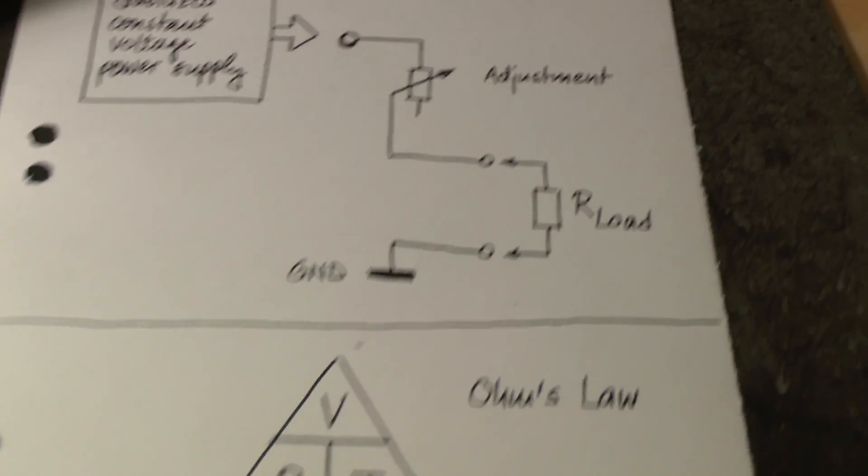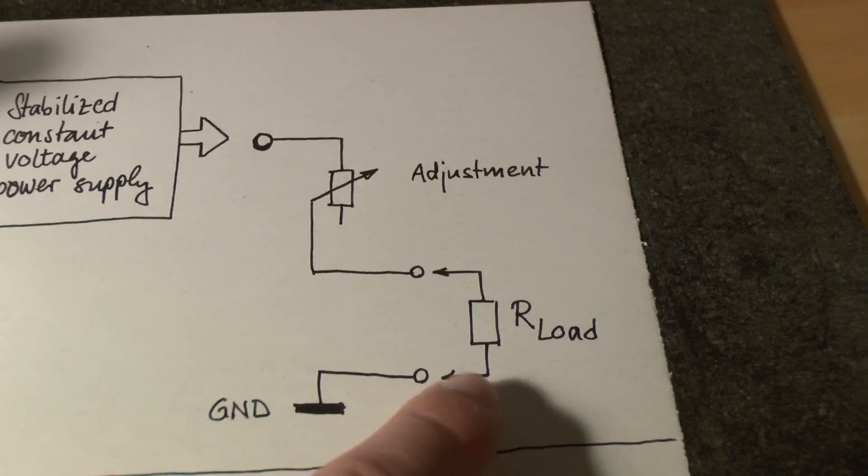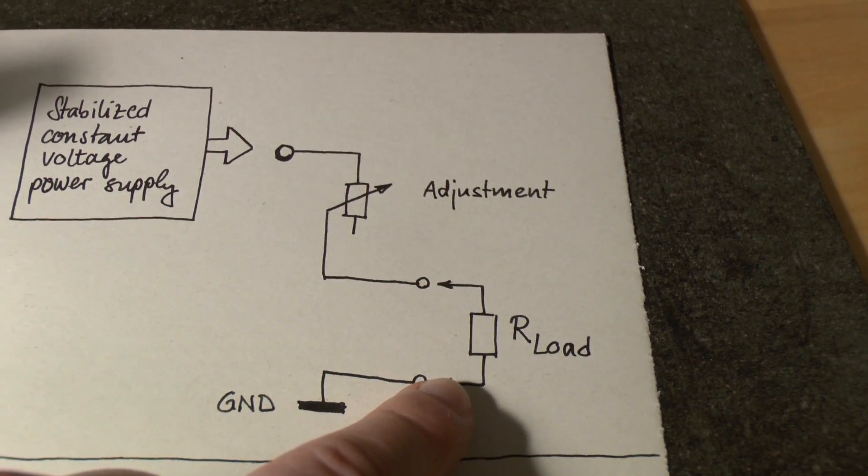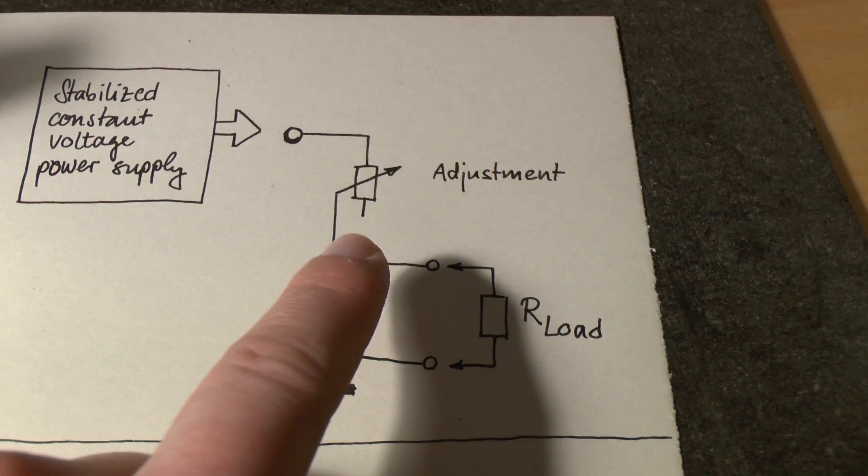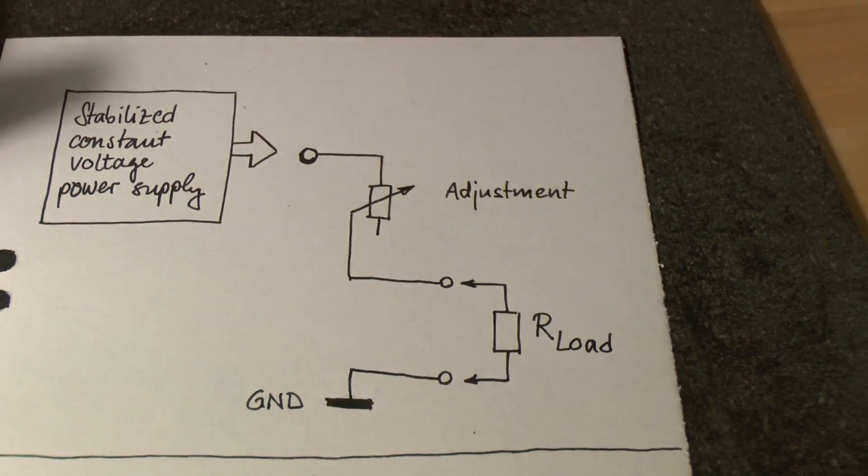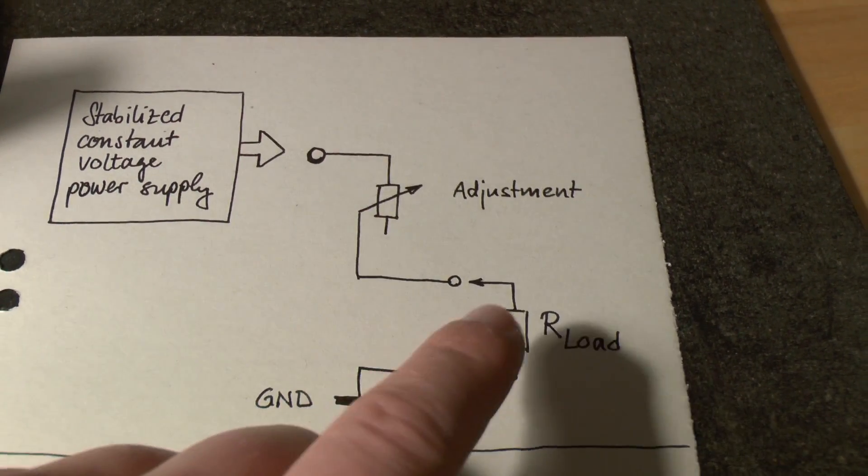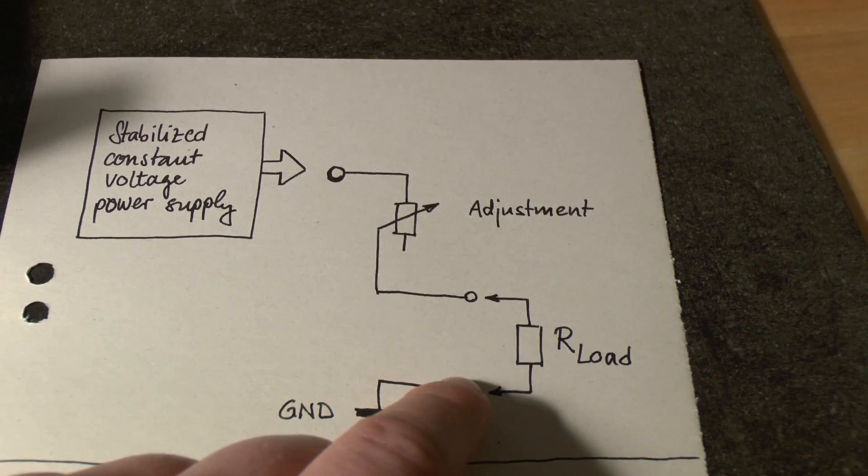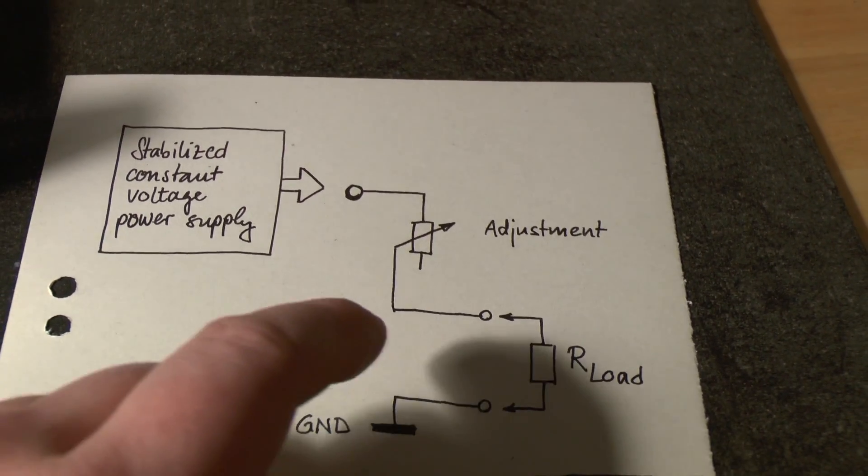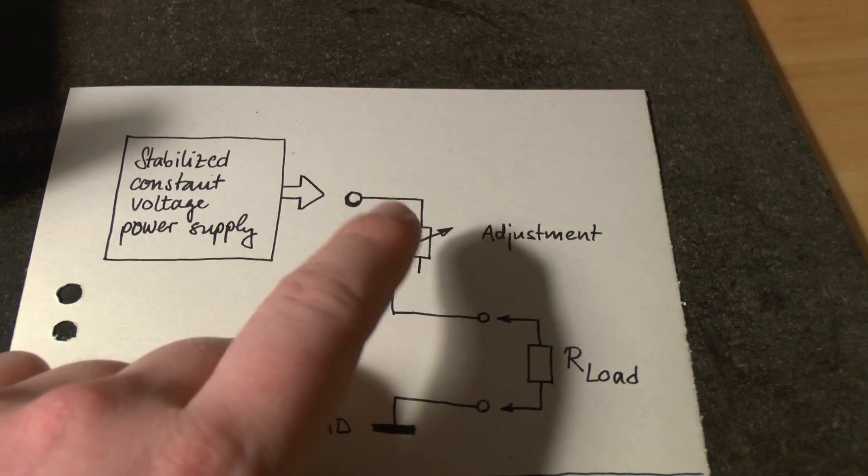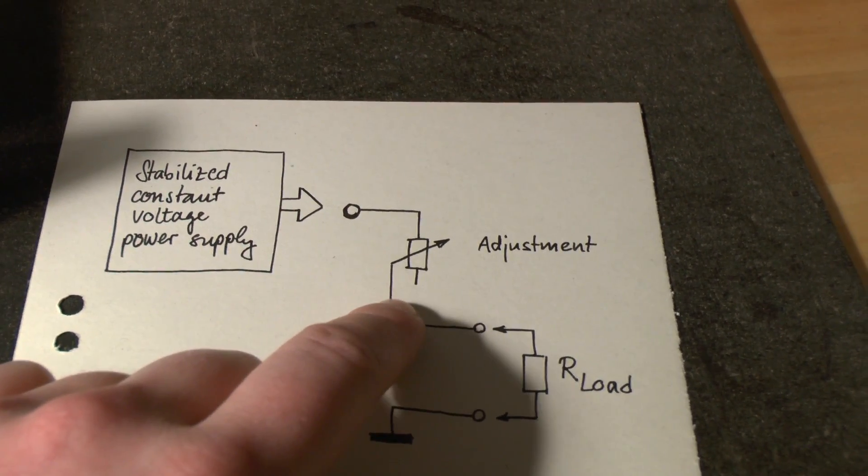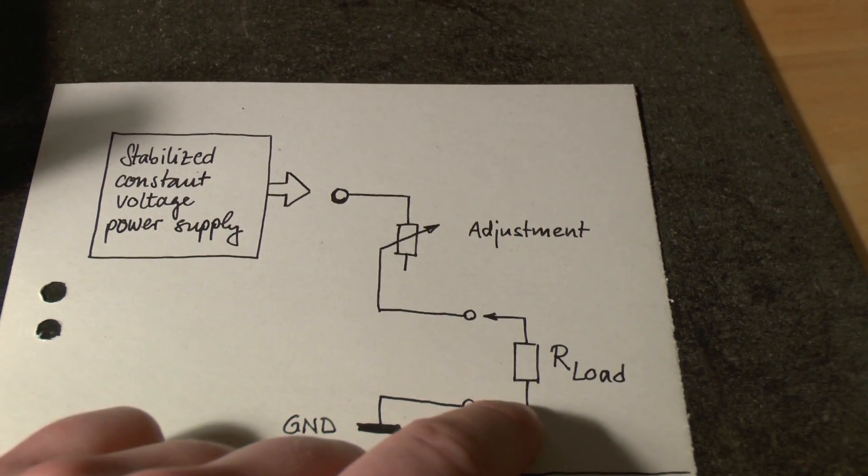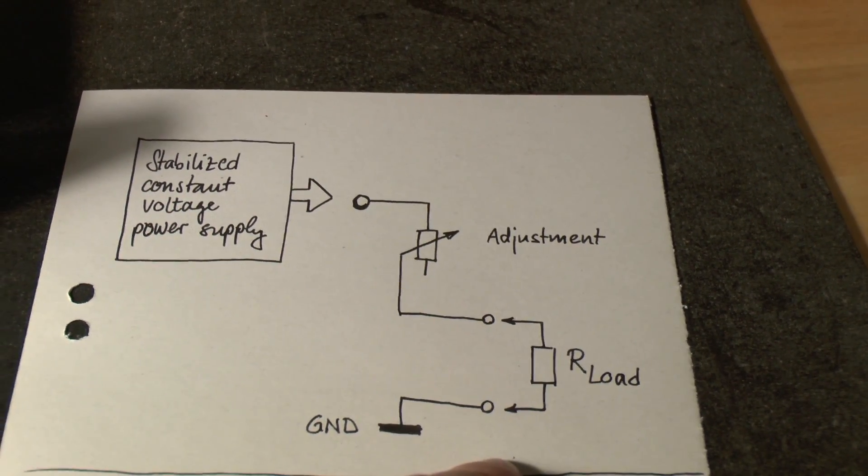Voltage equals resistance times current. So if this load right there is constant and does not change at all, everything's fine. You can set a voltage and whatever voltage you've set is going to be there on your load. However, as soon as the load changes or when you have adjusted a voltage, an output voltage, and then you hook up the load, you're going to notice that your voltage is going to change.